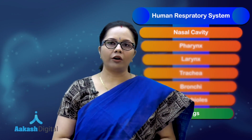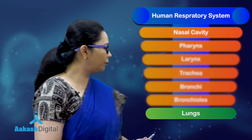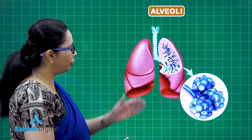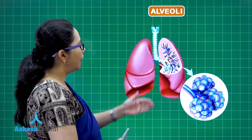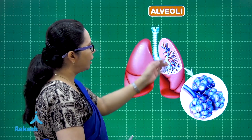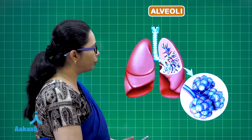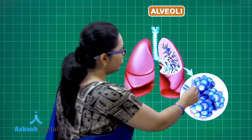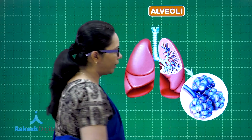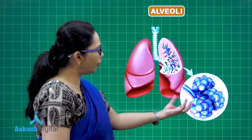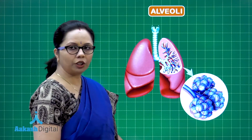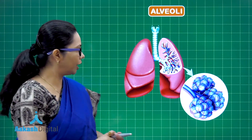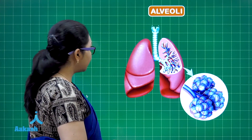Within the lungs there are a huge number of structures called the alveoli. If we see the structure of the lungs, these microscopic structures being enlarged here are the alveoli — small sac-like structures that collectively form the alveolar sac.